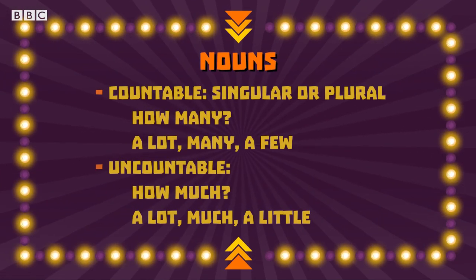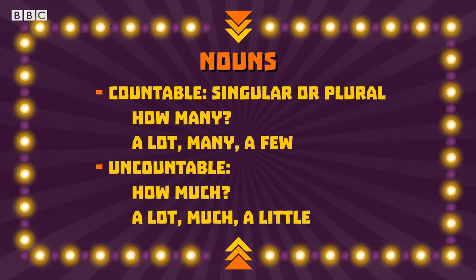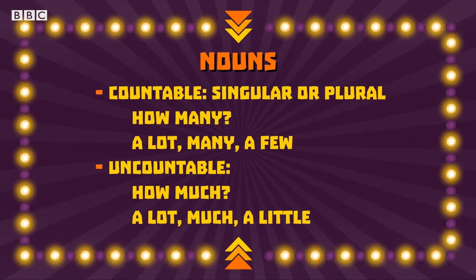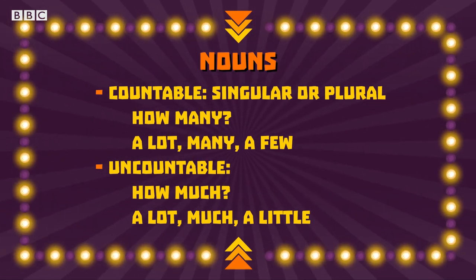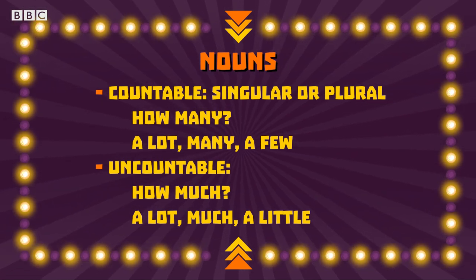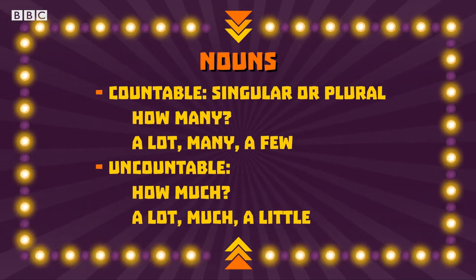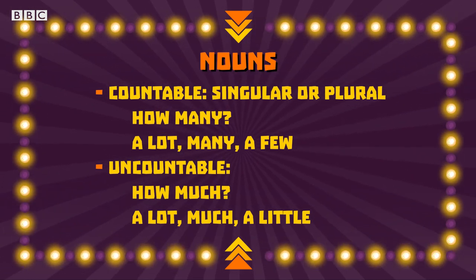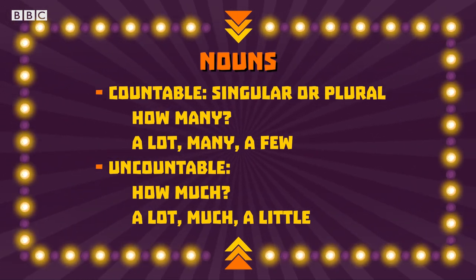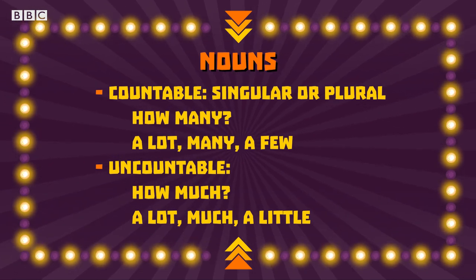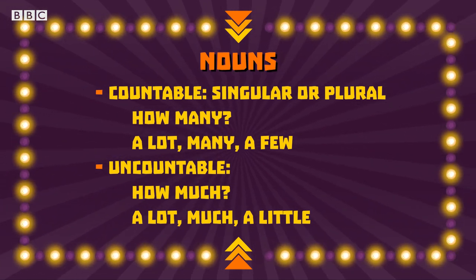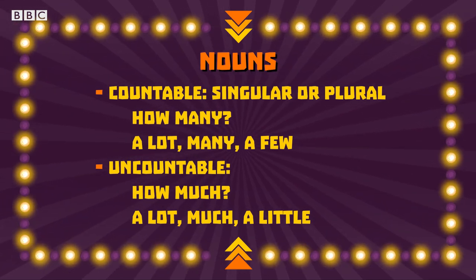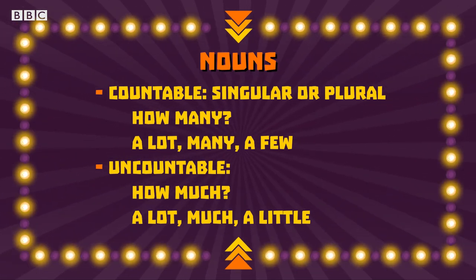Correct. Countable nouns can be divided into singular and plural — a chair, two chairs, three chairs. Uncountable nouns cannot. With countable nouns we ask 'how many' and use words such as a lot, many, and a few. With uncountable nouns we use 'how much' and words such as a lot, much, and a little.